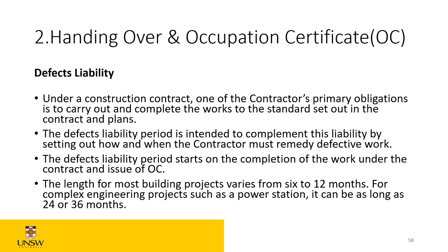The length of the defect liability period for most building projects varies from six to twelve months. For complex engineering projects such as a power station it can be as long as 24 to 36 months. These are for minor defects. For major defects we're talking about six years. So a builder who builds a house — even after the 12-month defect liability period — if there's a door handle not working, a lock issue, touch-up paint needed, or carpet defects, that's the one-year period. Major defects — waterproofing, structural defects, cracking, leaking — require six years warranty.